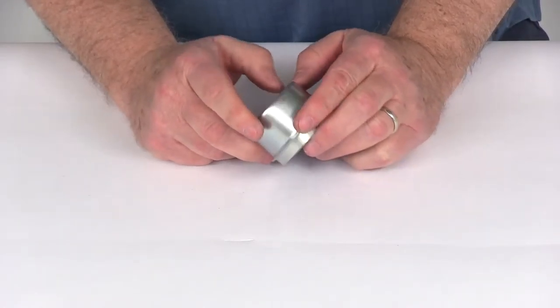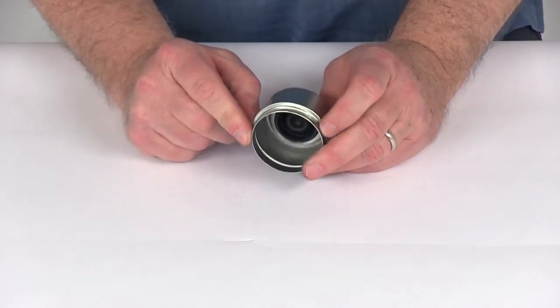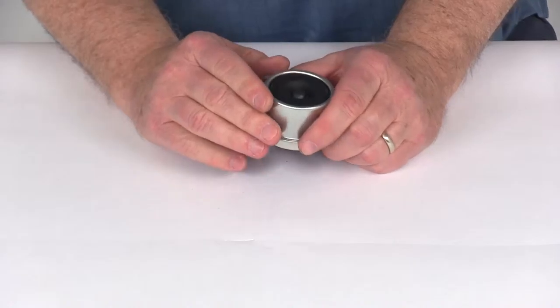Now this grease cap is designed to fit Trailer Hubs on Easy Lube Axels that have a 1.99 inch inner diameter. This has a nice corrosion resistant zinc plating.